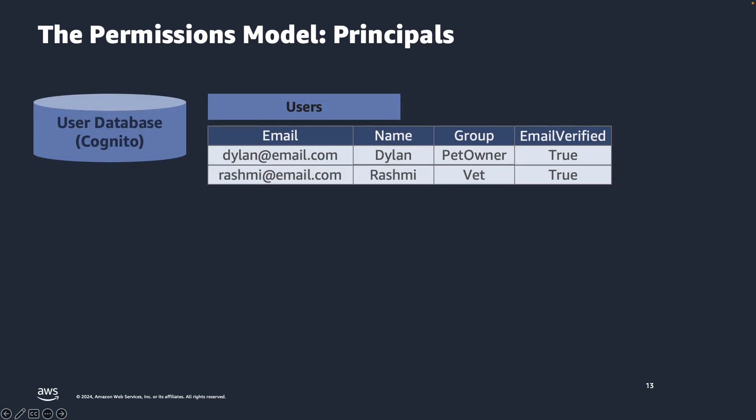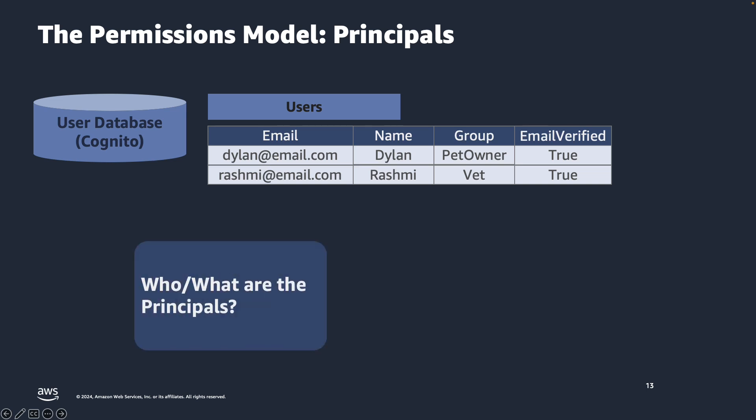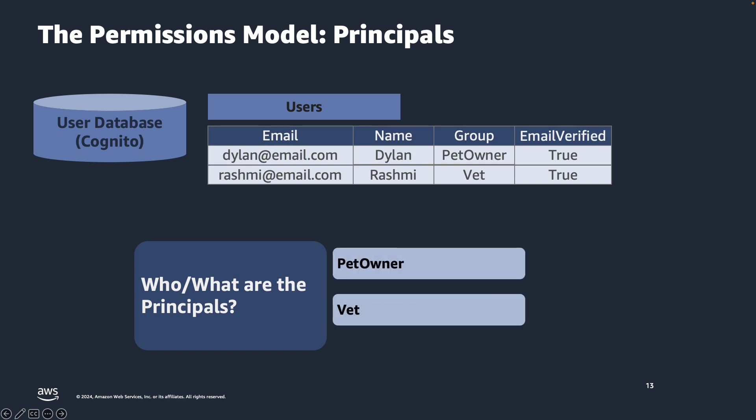Let's decide on the permissions model for our VET application portal. Note that permissions models are defined in terms of principals, resources, and actions — just as we saw in the Cedar language format. They define the actions that each principal is allowed to perform on resources. Your application's user database can be maintained in any identity provider database store of your choice. For the VET app, we use Amazon Cognito as the identity provider. In the Cognito user database, we maintain data about pet owners and vets. The principals are individuals like Dylan, who is a pet owner, or Rashmi, who is a vet.